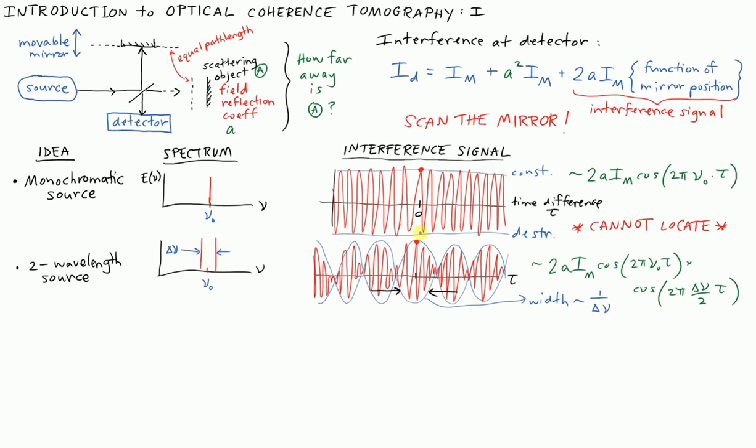This is a little bit better. We have reduced some of the ambiguity. We no longer could mistake this maximum for that maximum, but we still have a recurrence effect. We still don't know where the mirror is actually located. We still have a smaller number of equivalent locations where we might think that the mirror is. We can't tell them apart.